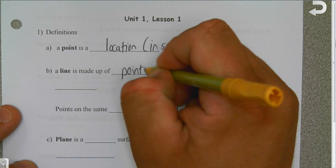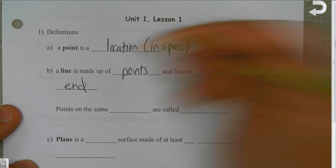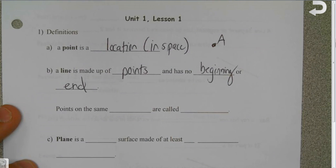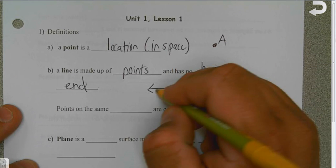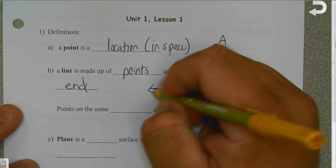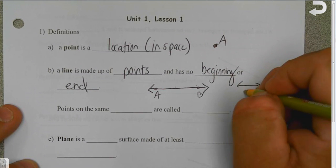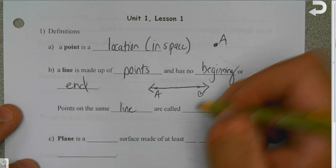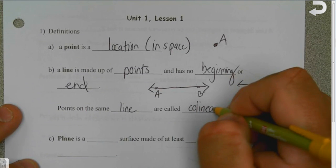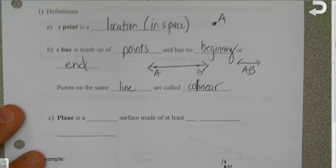A line is made up of points and it has no beginning or end. If I have a line made up of a lot of different points and I name two of them, then I would call this line AB. The reason why we can do that is because points on the same line are called collinear, that's two L's.